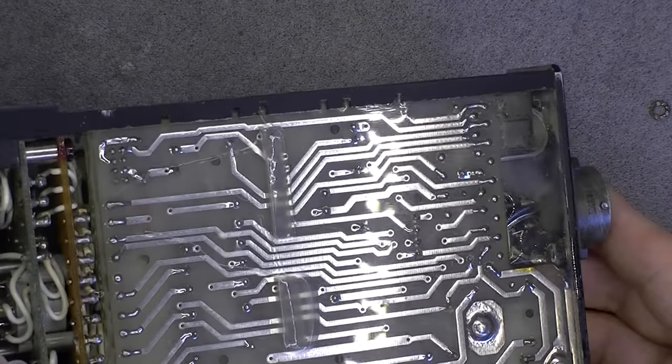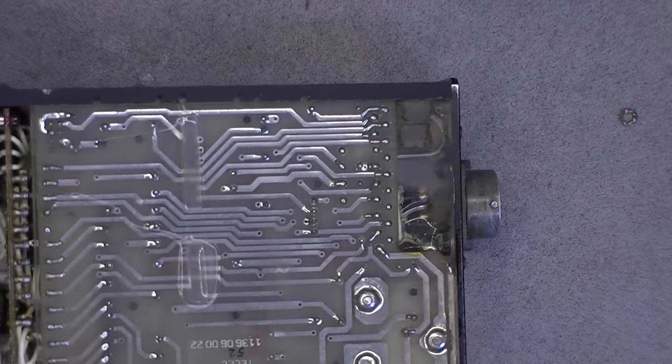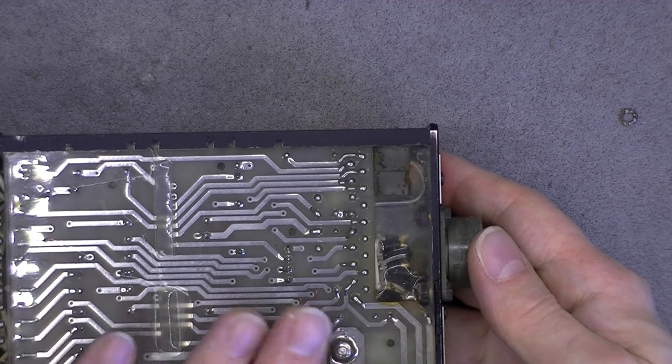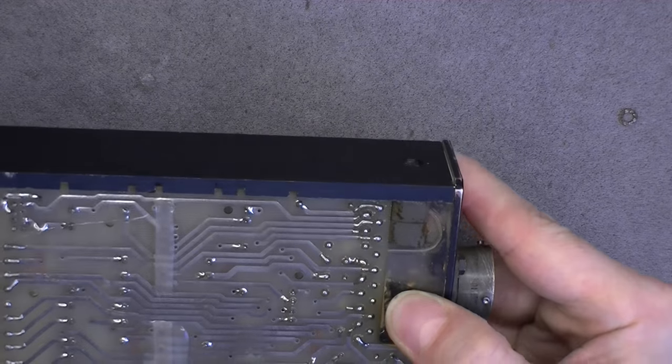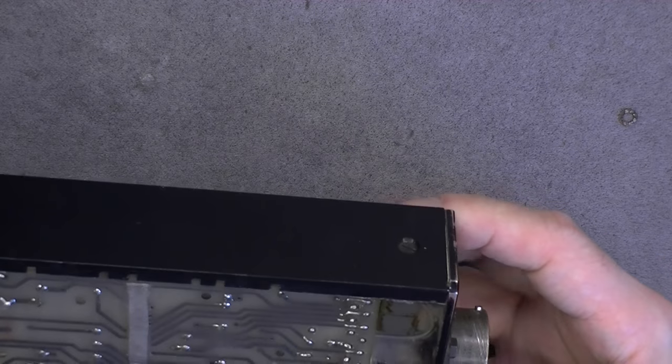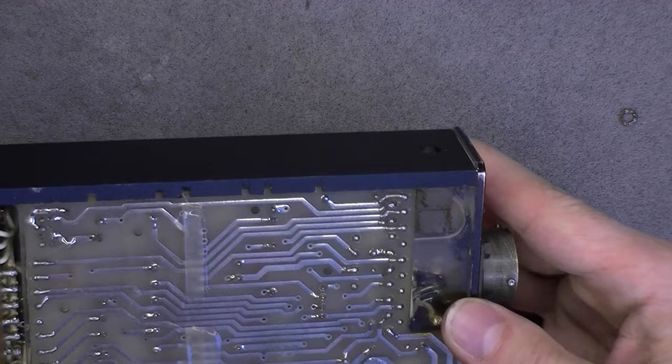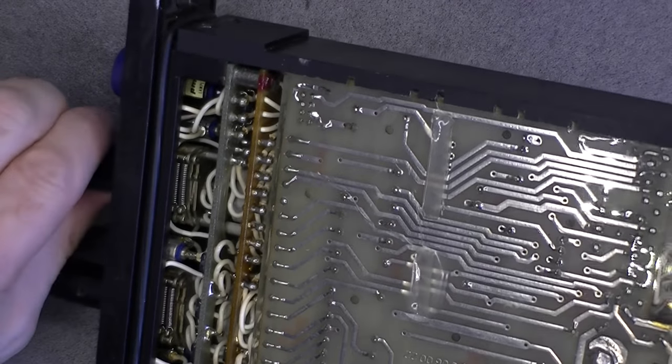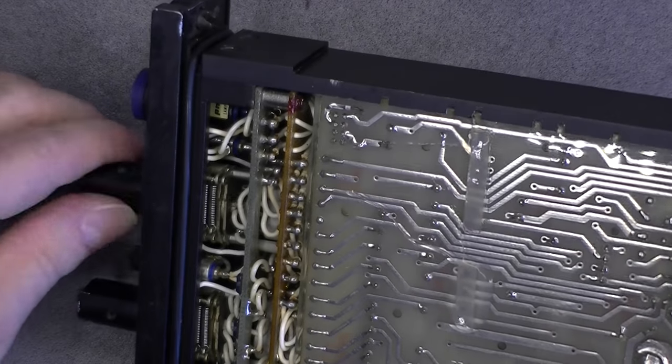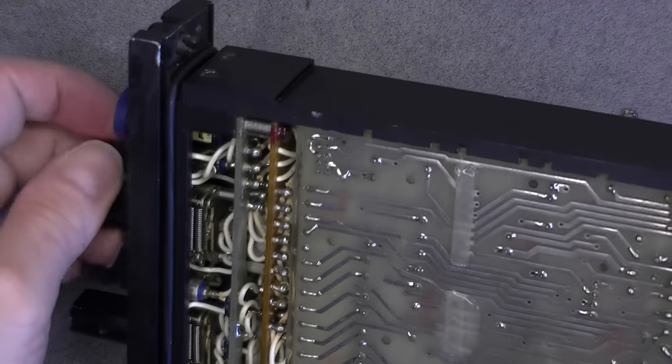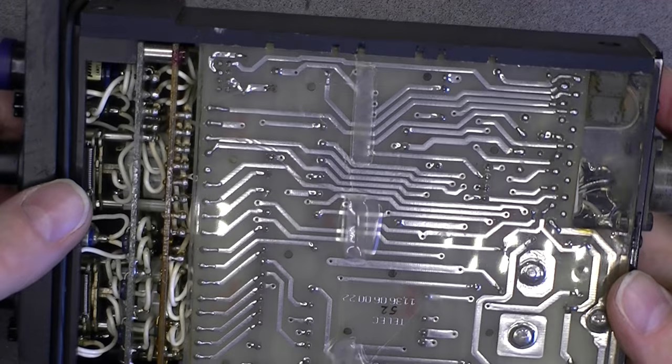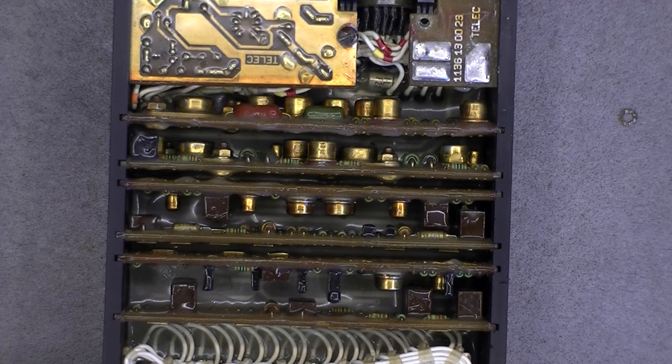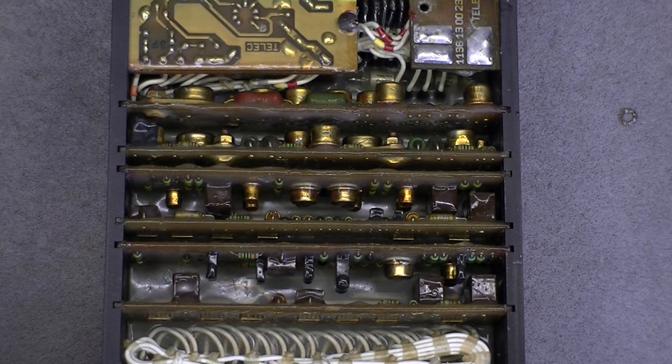You can see the pretty serious construction of the thing. All this is solid aluminum milled in a block it seems. Yes, machined aluminum, no die cast here, all made from a big block. And again the backside where you can see the quite amazing conformal coating.